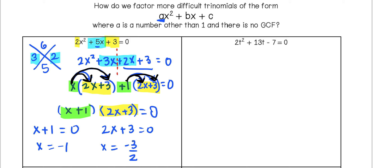For the next problem, we start with our leading coefficient of 2 times our constant of negative 7, so we're looking for factors of negative 14. The middle coefficient is positive 13. The two factors that work are 14 and negative 1: multiplying gives negative 14, and 14 minus 1 gives 13. So that's going to work to set up our grouping method.